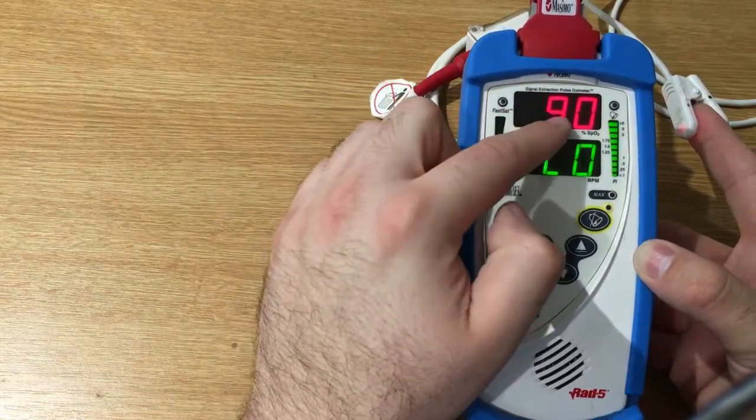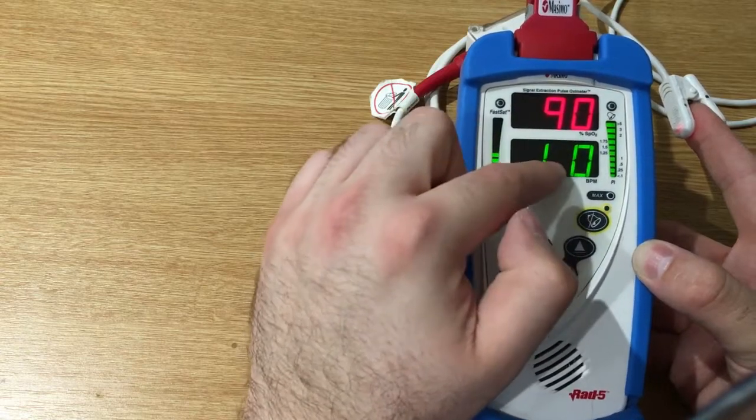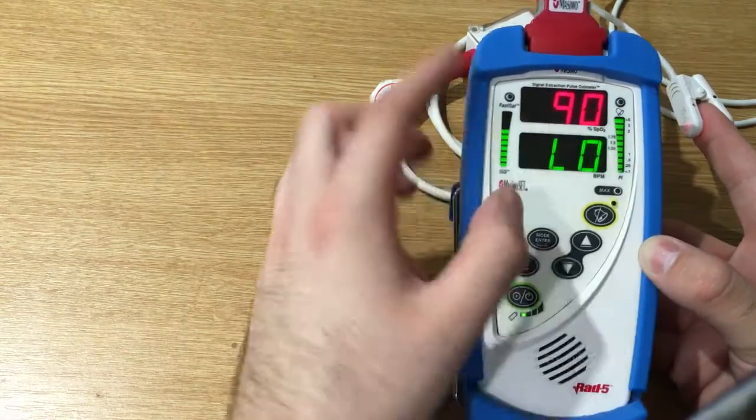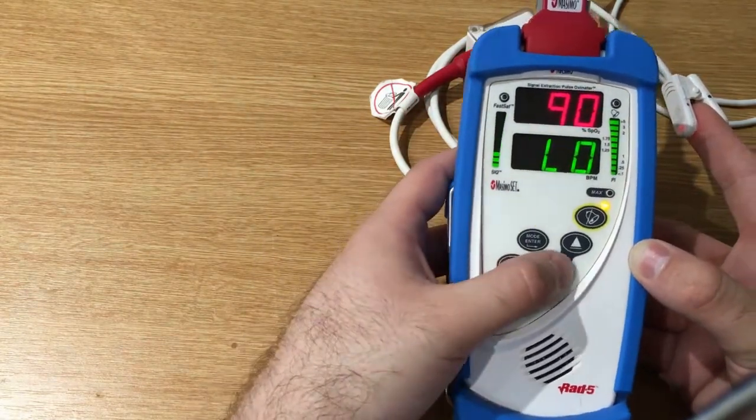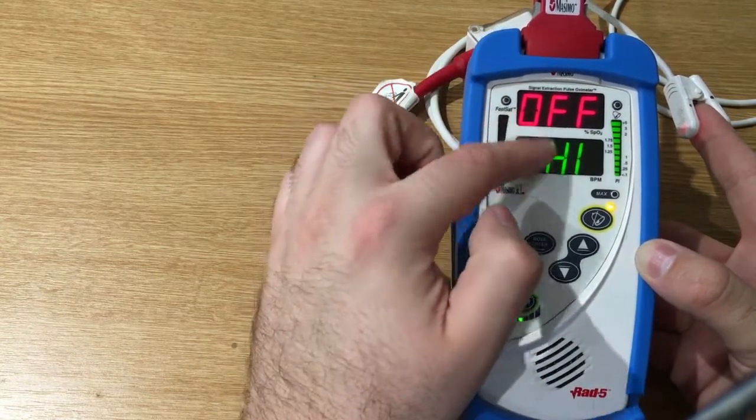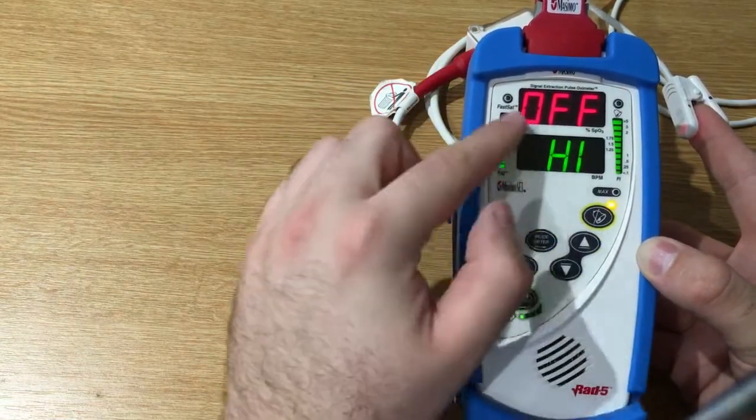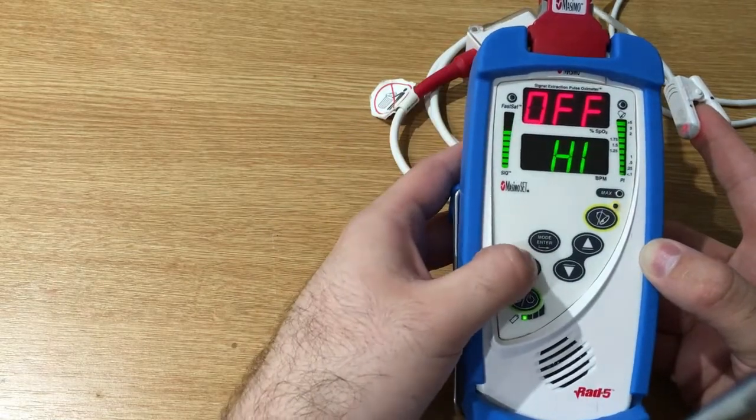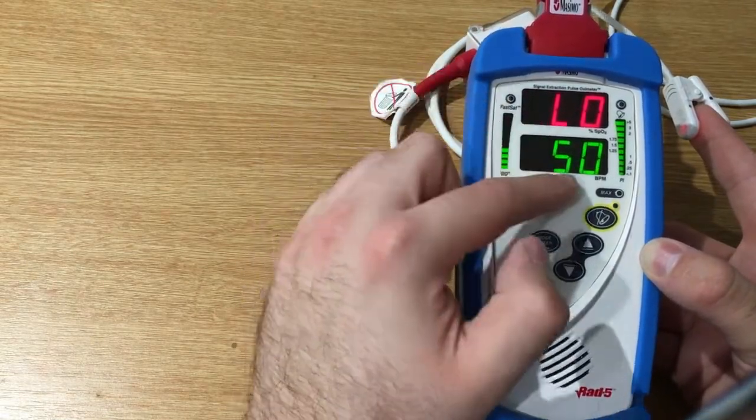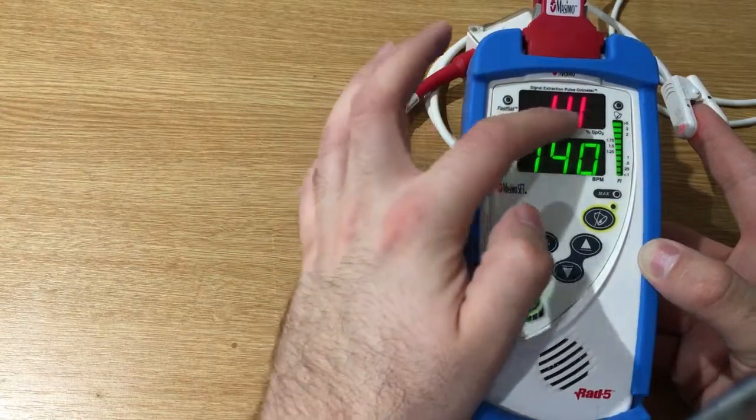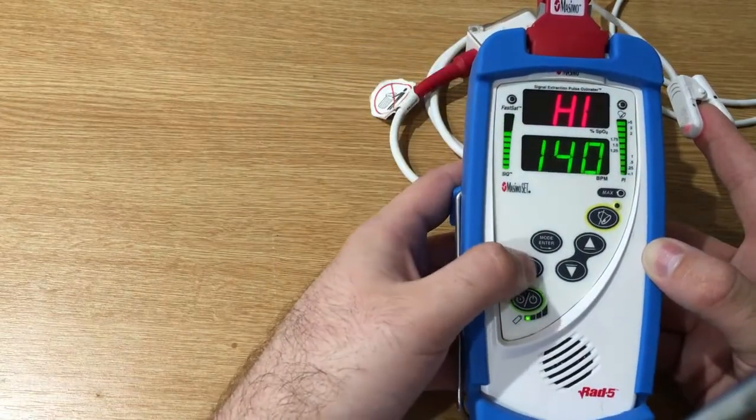So here we can set the alarm for low SP02, here for high SP02, here for low heart rate, and here for high heart rate.